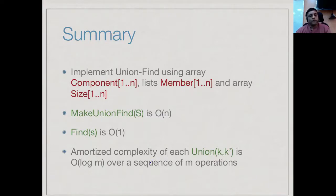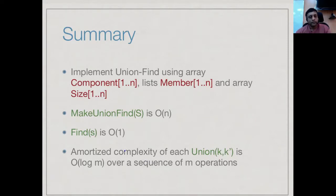To summarize: union-find is implemented using an array for component labels, an array of lists for the members of each component, and an array for component sizes. Initialization is O(n), find is O(1), and the amortized complexity for a sequence of m union operations is O(m log n). This gives Kruskal's algorithm a total complexity of O((m + n) log n).